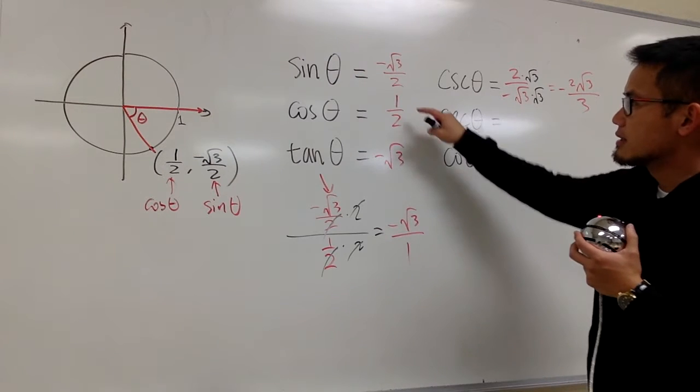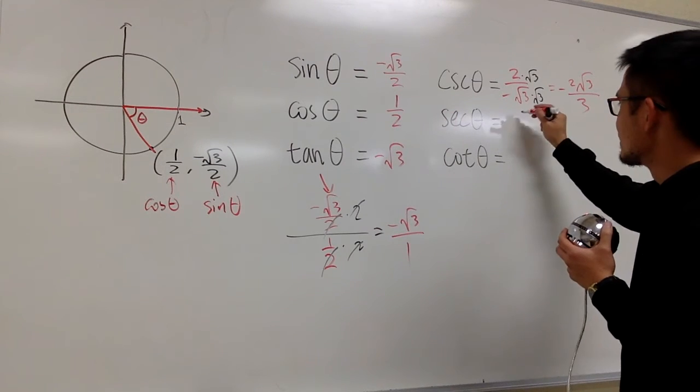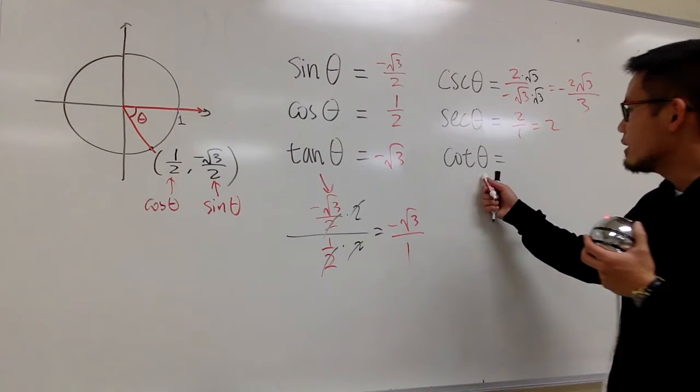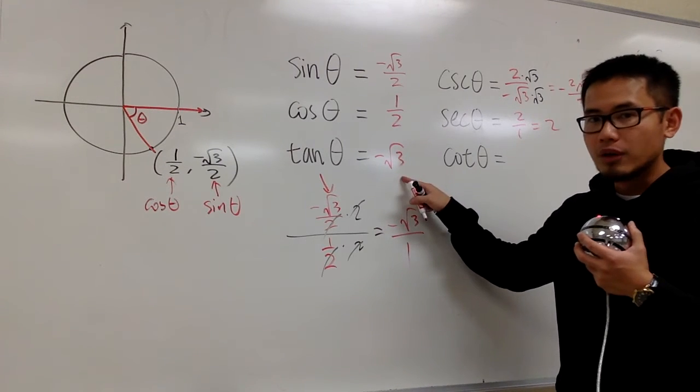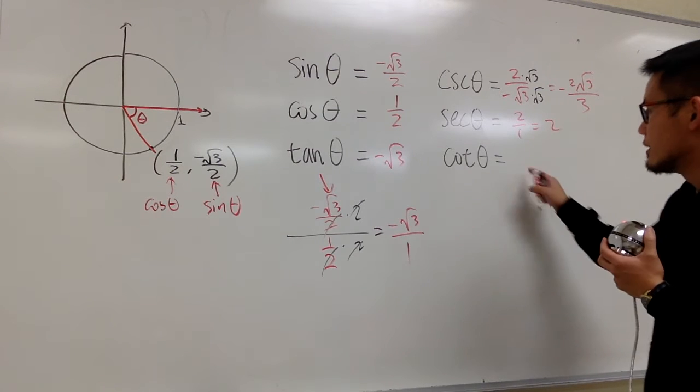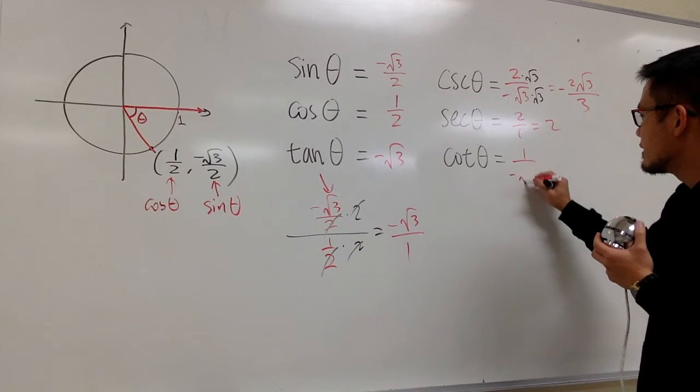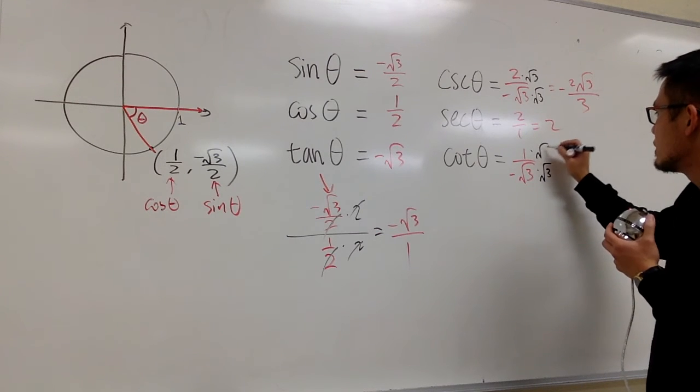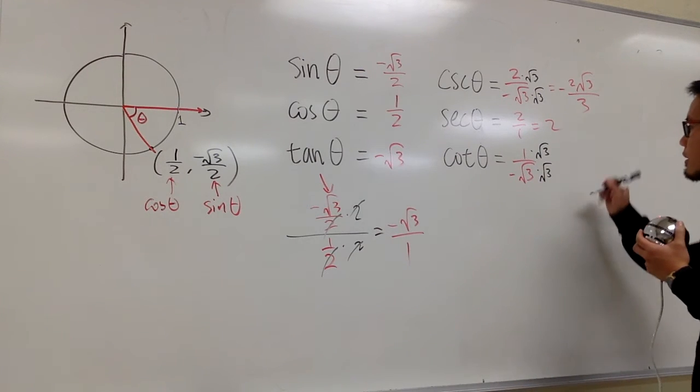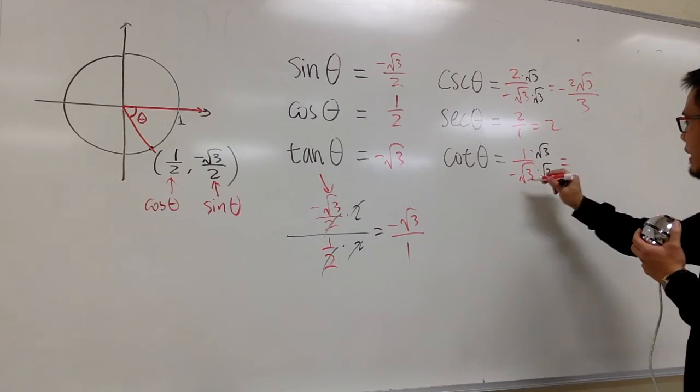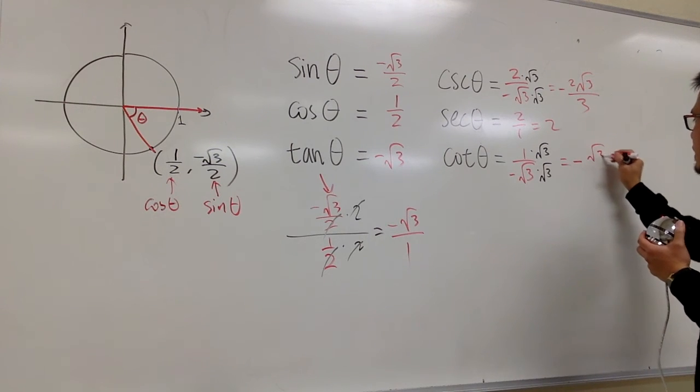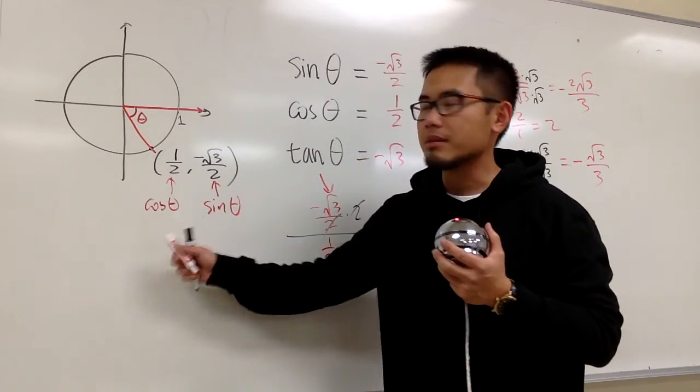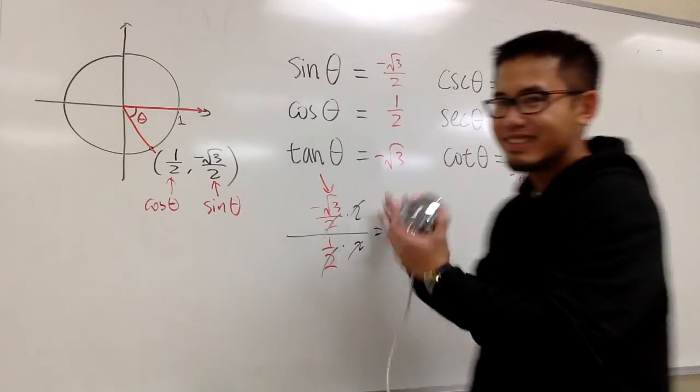For secant, it is 2 over 1, which is just 2. Lastly, we have cotangent, which is the reciprocal: 1 over -√3. Multiply by √3 on the top and bottom, giving -√3/3. That's it – you just have to remember cosine, sine.